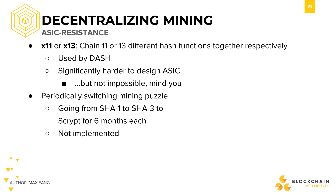Another idea that was tossed around was to design coins that periodically switch mining puzzles, making it difficult to optimize. For example, it could switch around from SHA-1 to SHA-3 to Scrypt for six months at a time each. However, the overhead required to create such an algorithm has historically deterred people from implementing it.